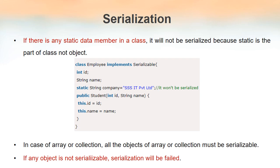For example, we have a static member — static String company. This cannot be serialized because this variable company belongs to the class, not to the object. Even if we create objects of this class Employee, the value of company will be common to all objects since it is declared as static. Similarly, when we create arrays or collections, if any one of the objects in that array or collection is not serializable, then serialization of the entire array will fail.